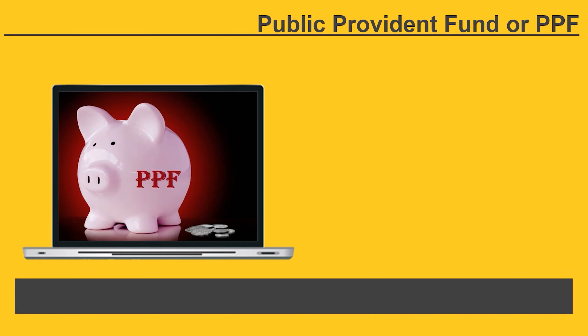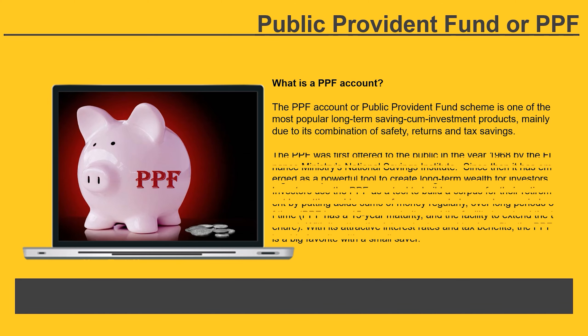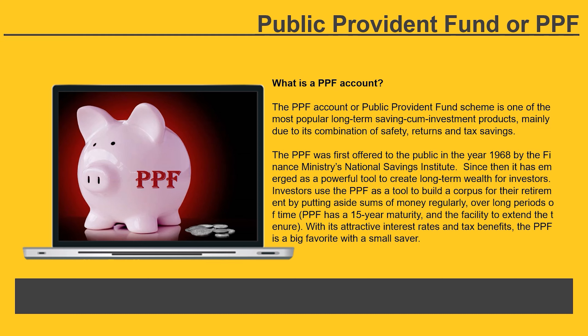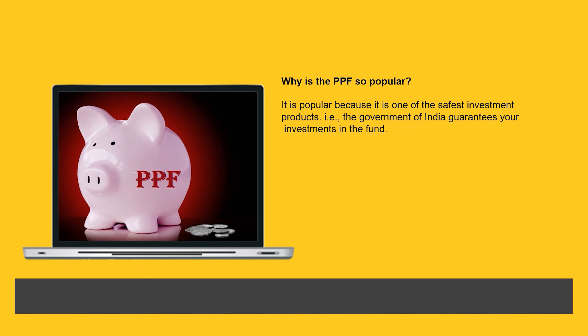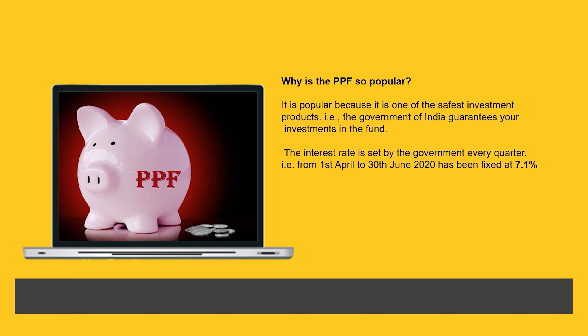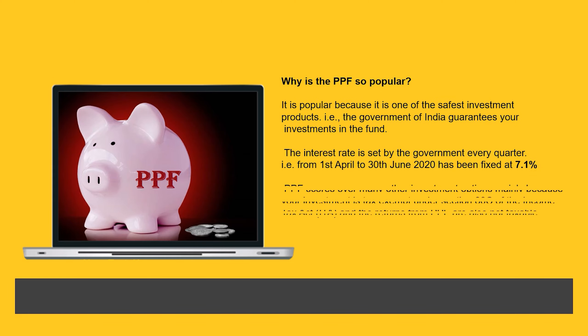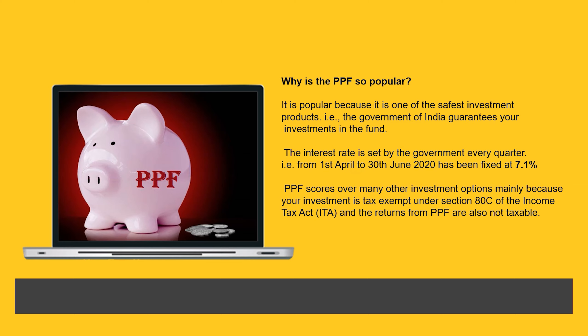The PPF account or Public Provident Fund scheme is one of the most popular long-term saving and investment products, mainly due to its combination of safety, returns and tax savings. It is popular because the Government of India guarantees your investments in the fund. The interest rate is set by the government every quarter — from 1st April to 30th June 2020 it was fixed at 7.1%. PPF scores over many other investment options mainly because your investment is tax-exempt under Section 80C of the Income Tax Act, and the returns from PPF are also not taxable.